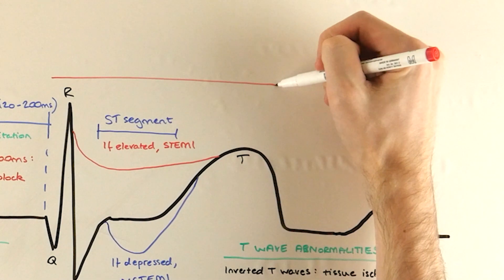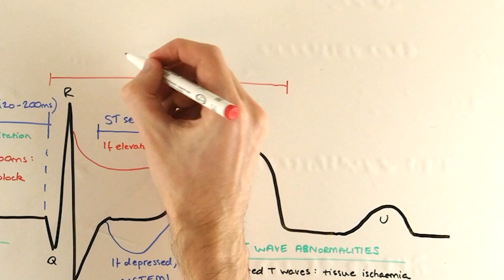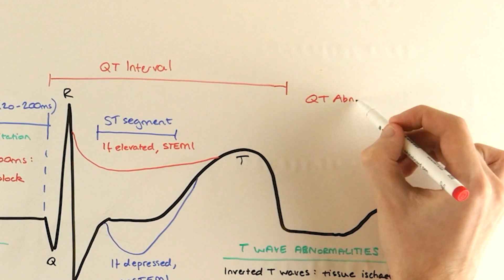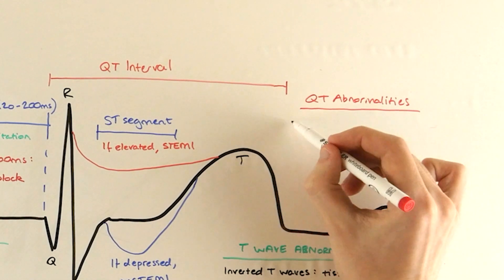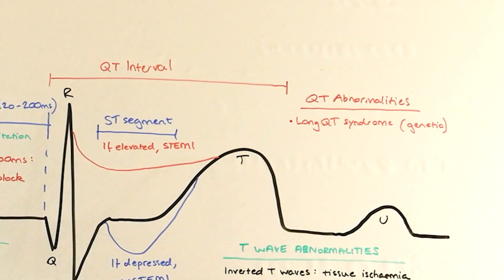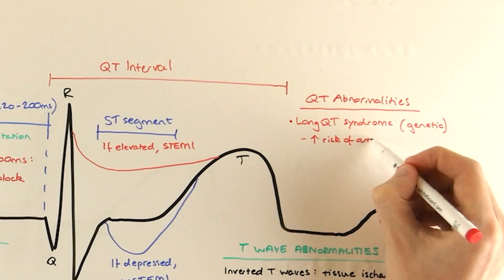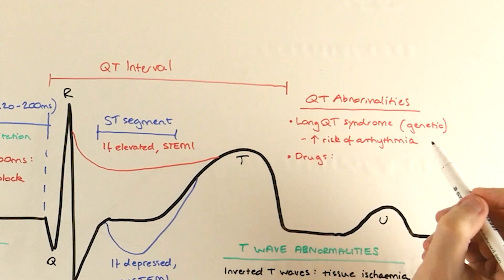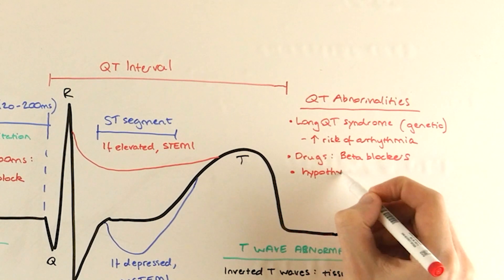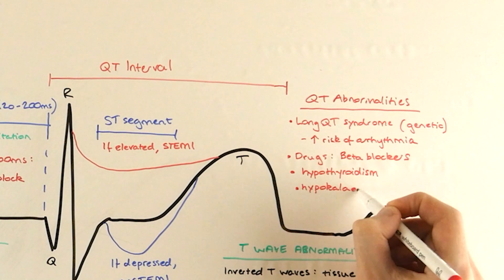Finally, we return to the QT interval. There are a few important things that can affect it. Some people have something called long QT syndrome, which can be carried genetically or acquired later, and the important thing is that it places you at higher risk of developing a cardiac arrhythmia. And lastly, certain medications such as beta blockers can cause a long QT, as can hypokalemia or hypothyroidism.